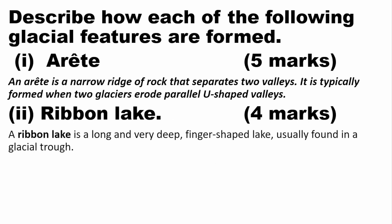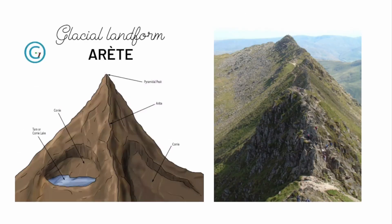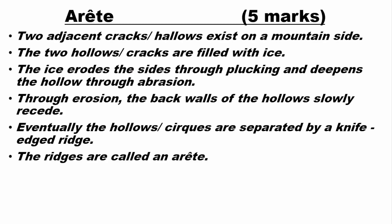Describe how each of the following glacial features are formed. An arete is a narrow ridge of rocks that separates two valleys. It is typically formed when two glaciers erode parallel U-shaped valleys. Two adjacent hollows exist on a mountainside; these hollows are filled with ice. The ice erodes the sides through plucking and deepens the hollow through abrasion. Through erosion, the back walls of the hollows recede, and eventually the hollows or cirques are separated by a knife-edged ridge. These ridges are what we call an arete.